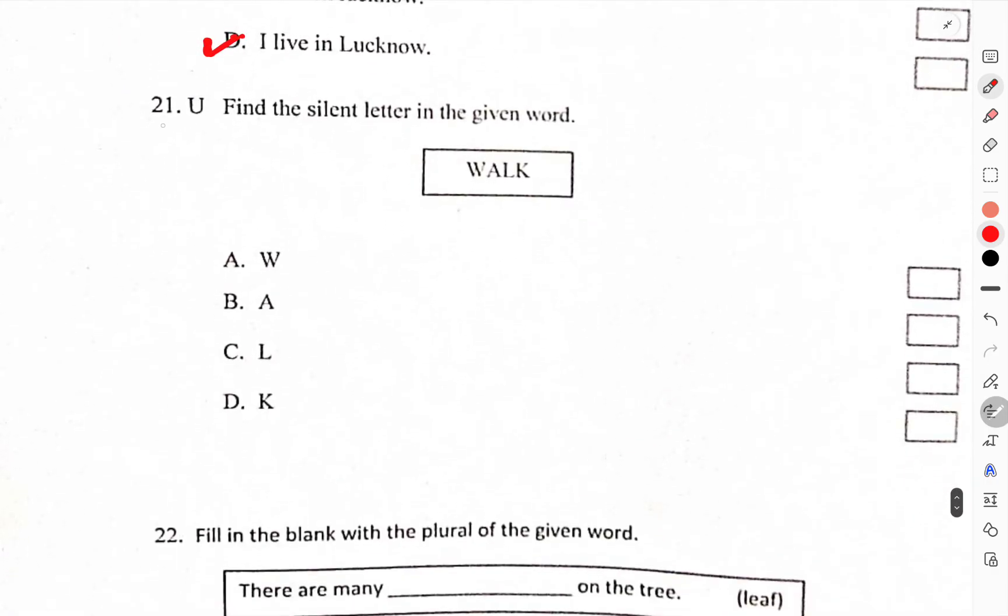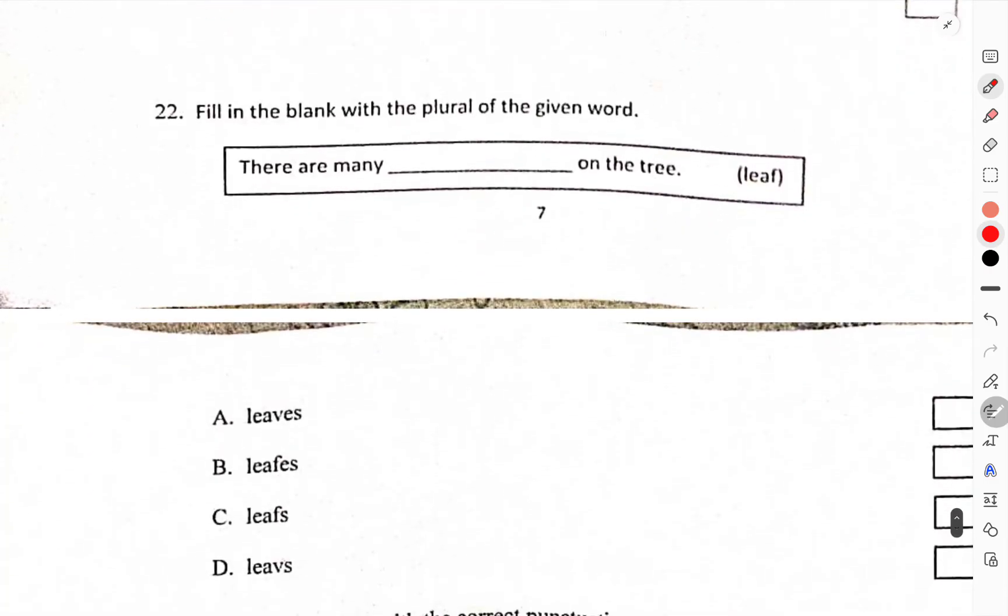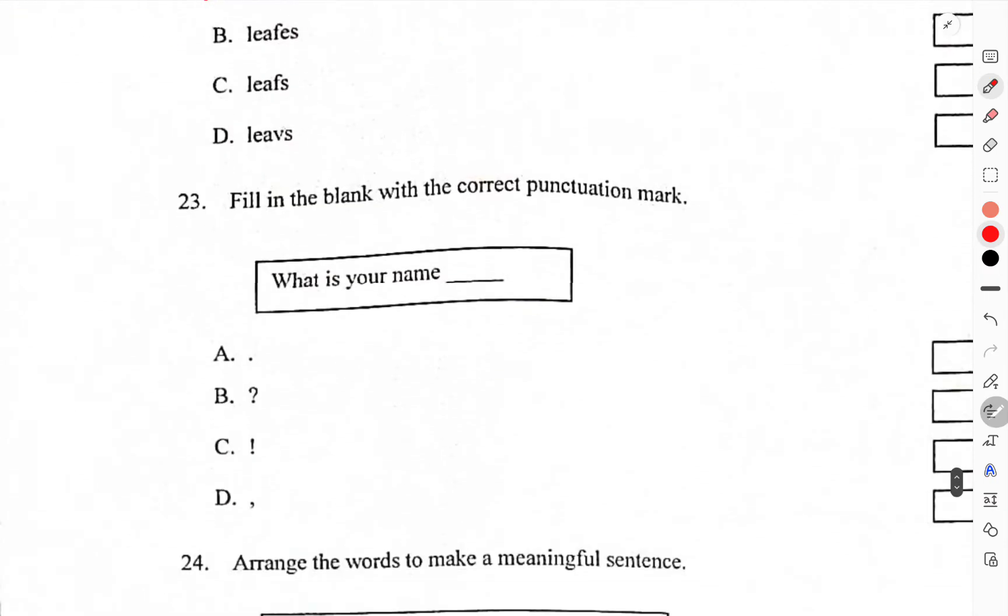Find the silent letter in the given word walk. What do we have to read? Walk. L is silent. Fill in the blank with the plural of the given word. Leaves.